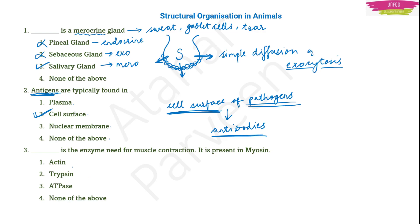The third question: dash is the enzyme needed for muscle contraction, and it is present in myosin. Myosin and actin are types of muscle fibers present in our muscles. The options are actin, trypsin, ATPase, and none of the above. The enzyme needed for muscle contraction, which is present in myosin, is actually ATPase.